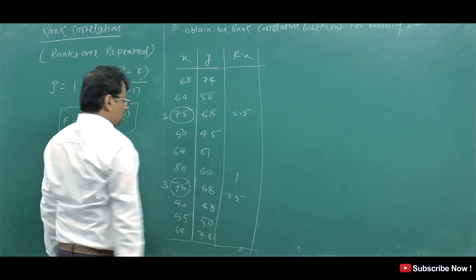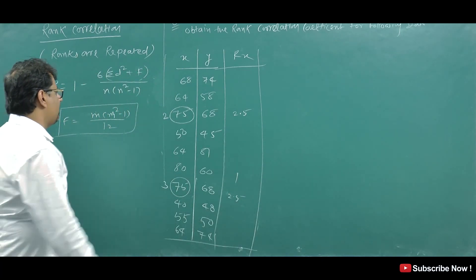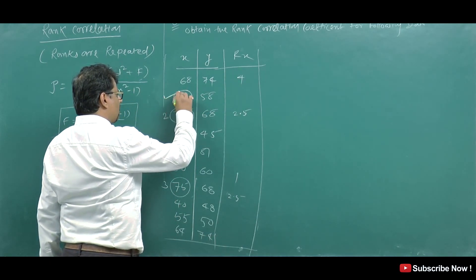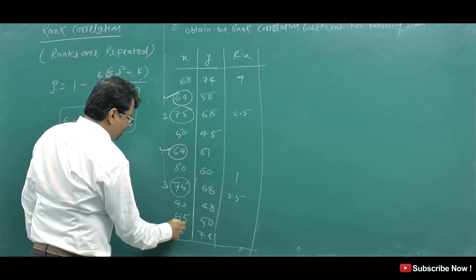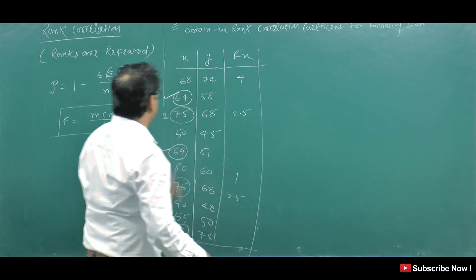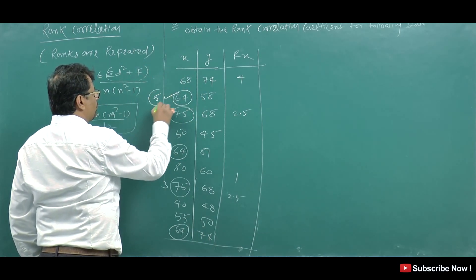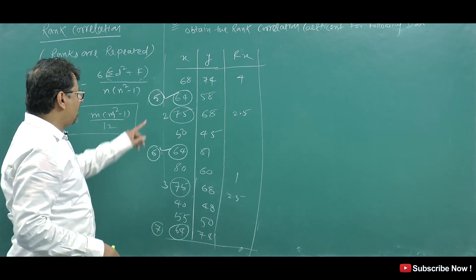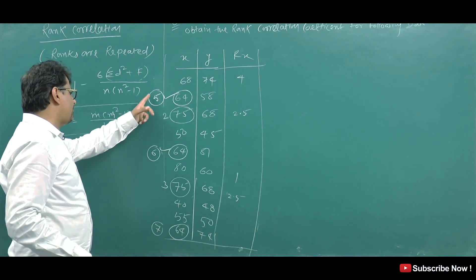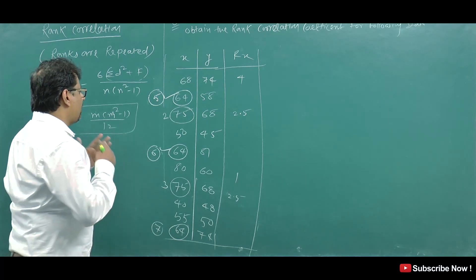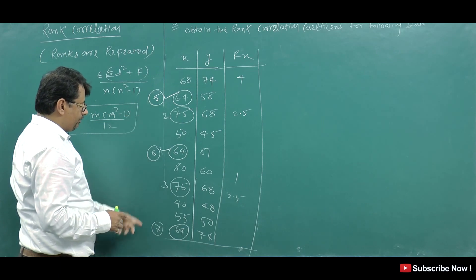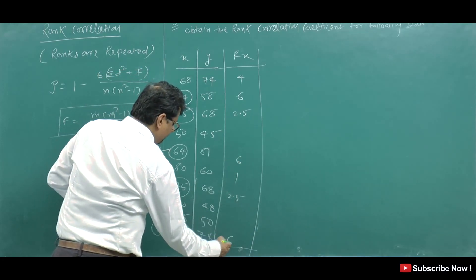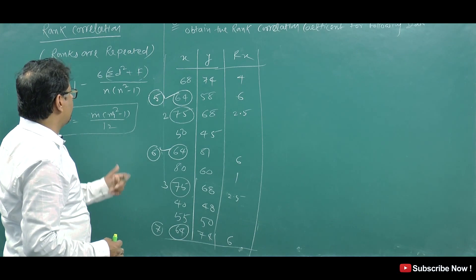The next rank after 2 and 3 is 4. Now 64 appears — here it's 64, here it's 64, here it's 64 — it is repeated 3 times, so it would take ranks 5, 6, and 7. Since 3 values repeat, we take the average: 5 plus 6 plus 7 divided by 3 equals 18 divided by 3, which equals 6. So all three occurrences of 64 get rank 6.